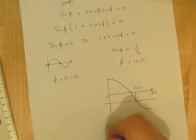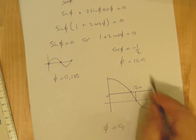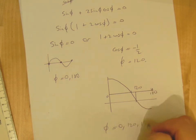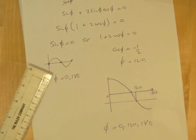So that's it: φ = 0, 120, and 180. We've answered the question.